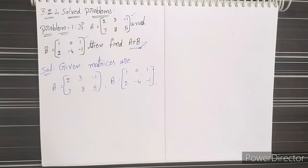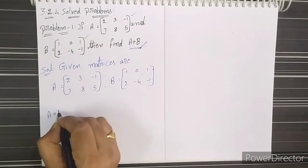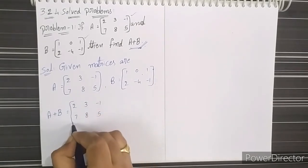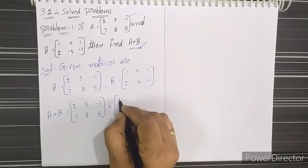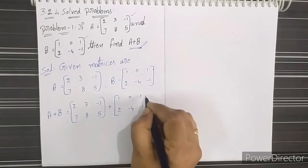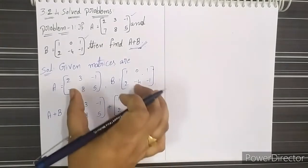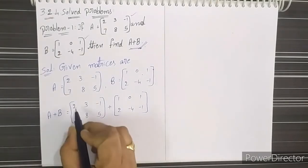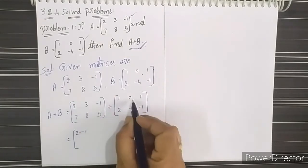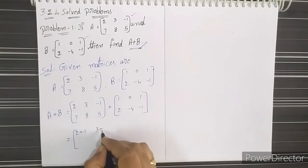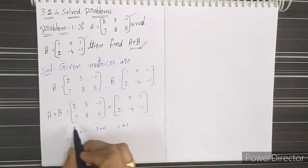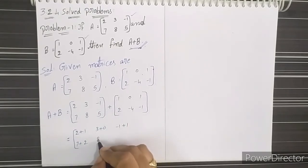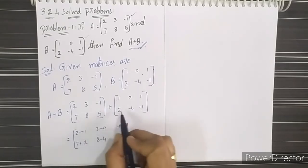We have to find the addition A plus B. The process is: A plus B equals [2, 3, -1; 7, 8, 5] plus [1, 0, 1; 2, -4, -1]. The addition of matrices means the addition of each corresponding element. That is: 2+1, 3+0, -1+1; 7+2, 8+(-4) which is 8-4, 5+(-1) which is 5-1.